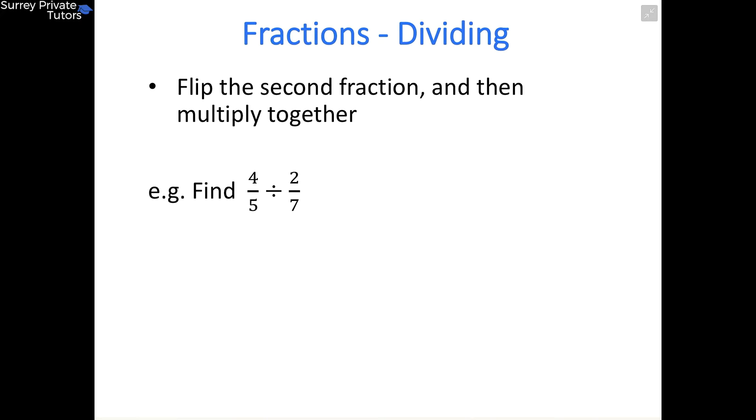So here the one that we're going to flip is 2/7, and that's going to become 7 over 2. And you leave the 4/5 exactly how it is. And when you flip the second fraction, that means that the division sign then becomes a multiply sign, so we'll have multiply by 7 over 2.